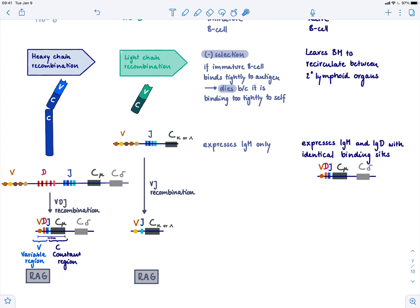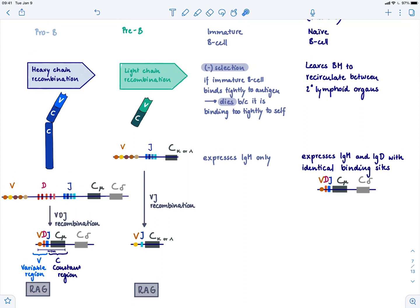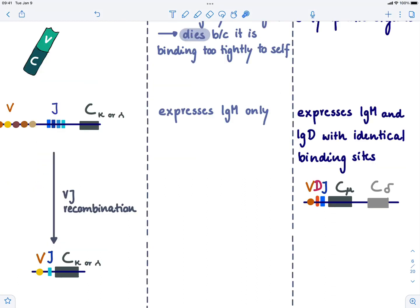If a B cell is immature, it only expresses IgM—it's just the first one that comes. If it's naive and leaves the lymph node, it expresses IgM and IgD with identical binding sites. Half of the mRNAs are translated into the mu heavy chain and about half into the delta heavy chain, but they have the exactly same antigen binding site. Why do we get this? That's due to alternative mRNA processing. For some, there's a stop right after the mu constant region; for others, there's splicing out of the mu constant region and you get the variable region and the delta heavy chain.